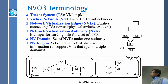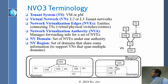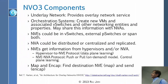A region consists of multiple domains. To summarize: a virtual network (VN) consists of many tenant systems (TS) connected by NVEs. When you take many VNs, that becomes a domain. When you take many domains, that becomes a region. The underlay network is the physical network that provides the overlay network service.